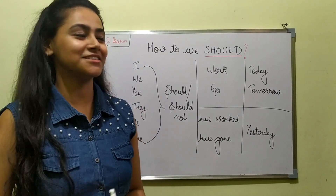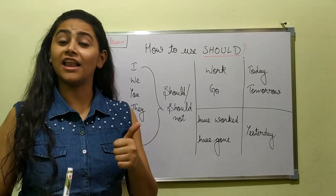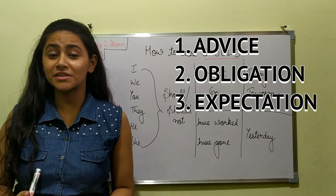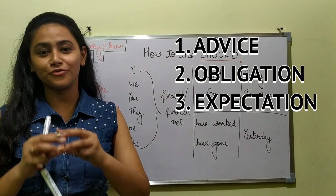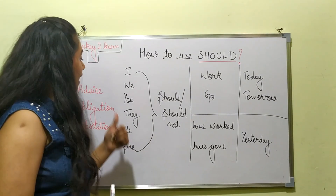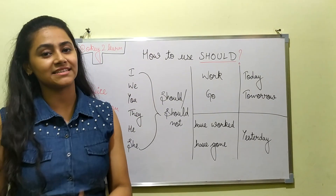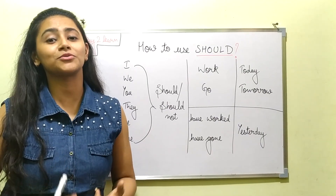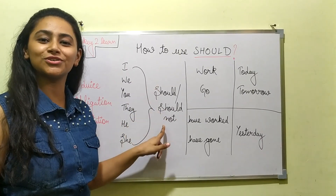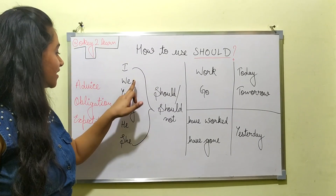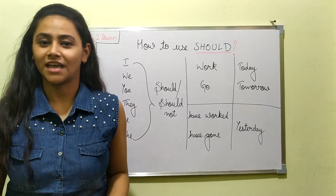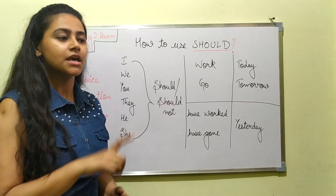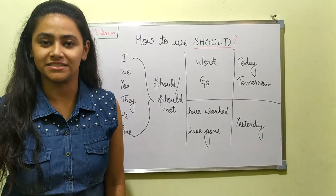Just as a reminder: the modal 'should' is used for three cases. First is advice, second is obligation, and third is expectation. Remember the usage so that we can further focus on sentence formation when we use the modal. Starting with all subjects — whether you are talking about self, others, or anything — you are going to use 'should' or 'shouldn't' for everything. No difference is made whether you use we, he, or they. 'Should' is used for affirmative sentences, and 'should not' is used for negative sentences.